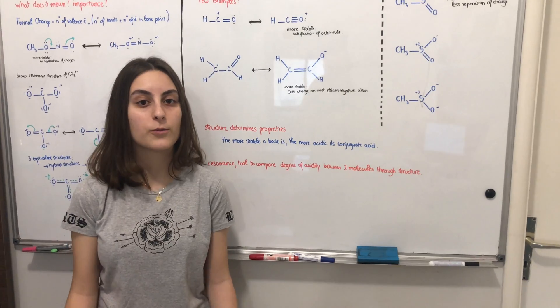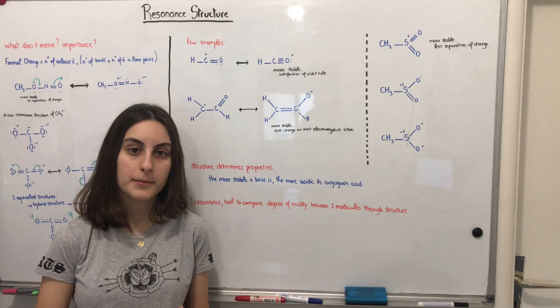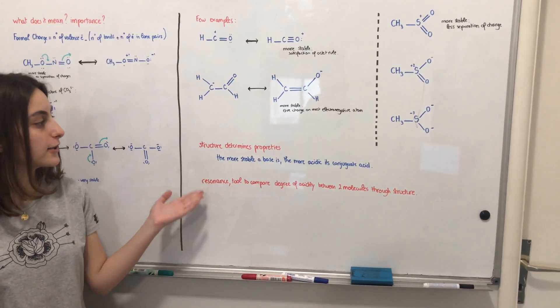So in conclusion, why are resonance structures important? Resonance structures are important because they can help us determine if a molecule is stable or not. And so structure determines property.